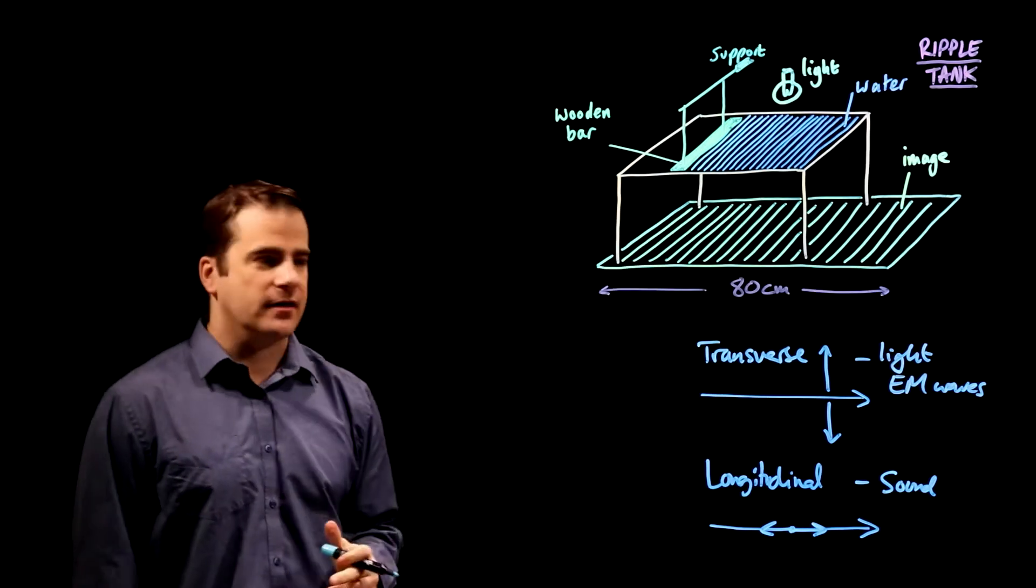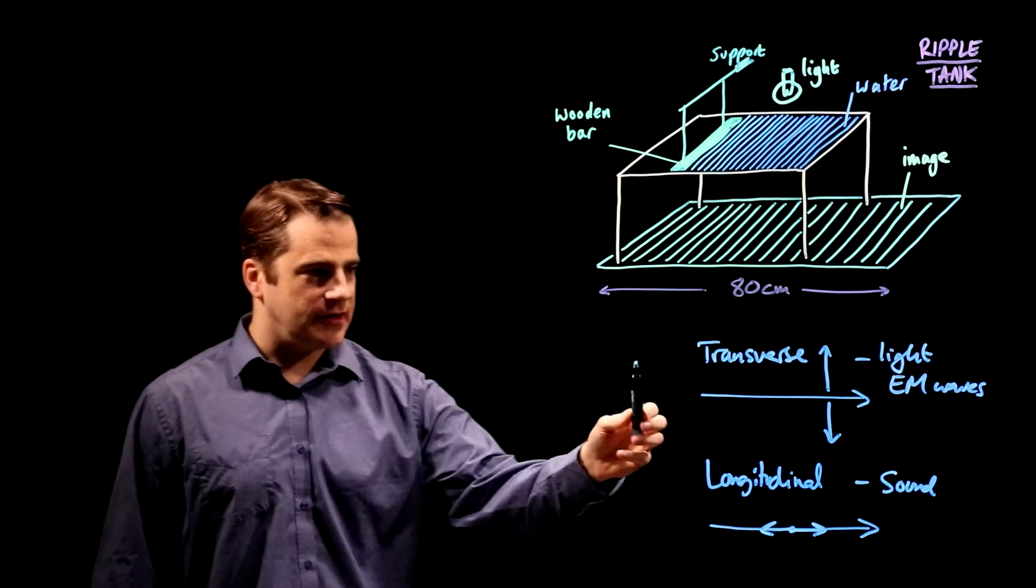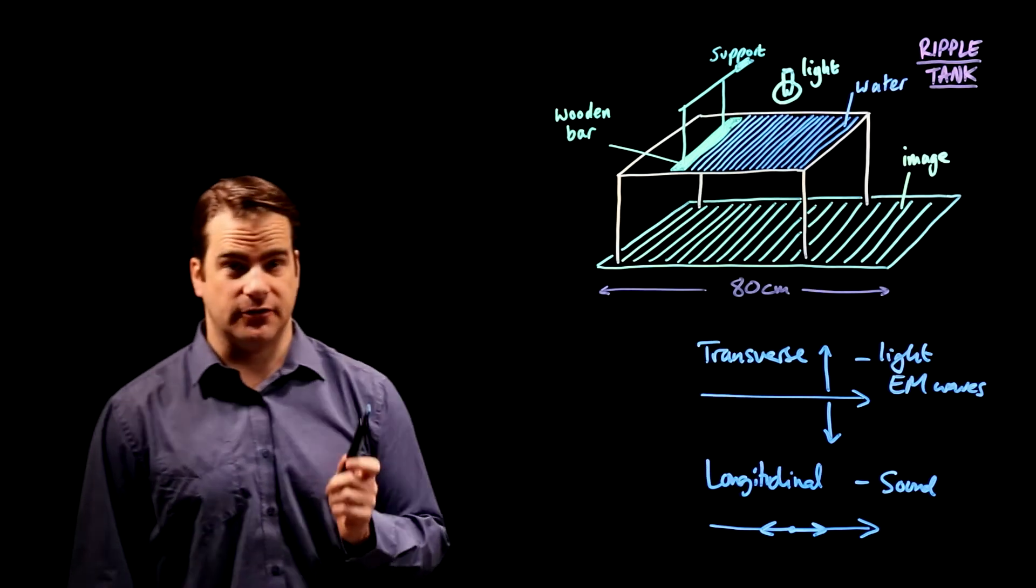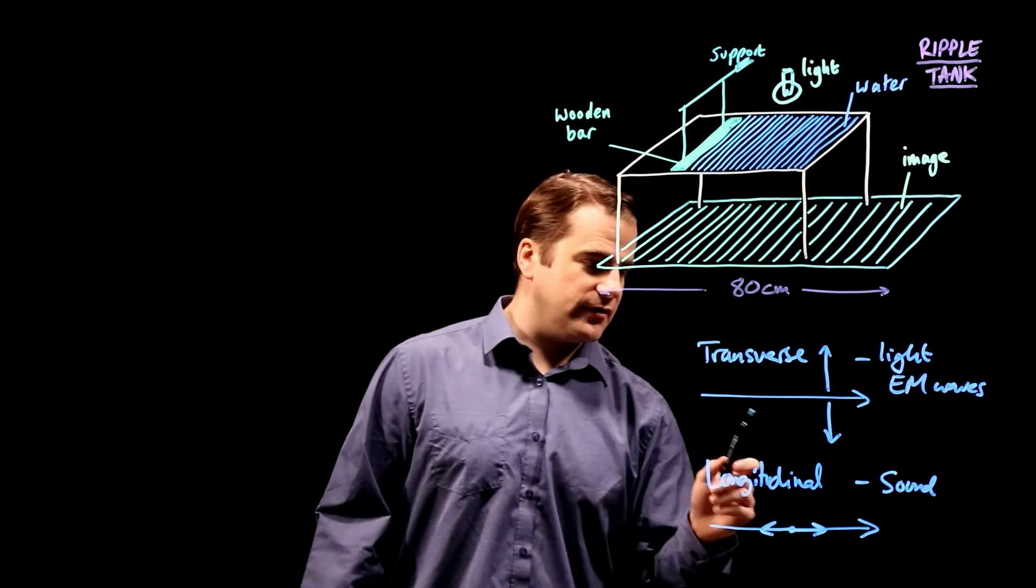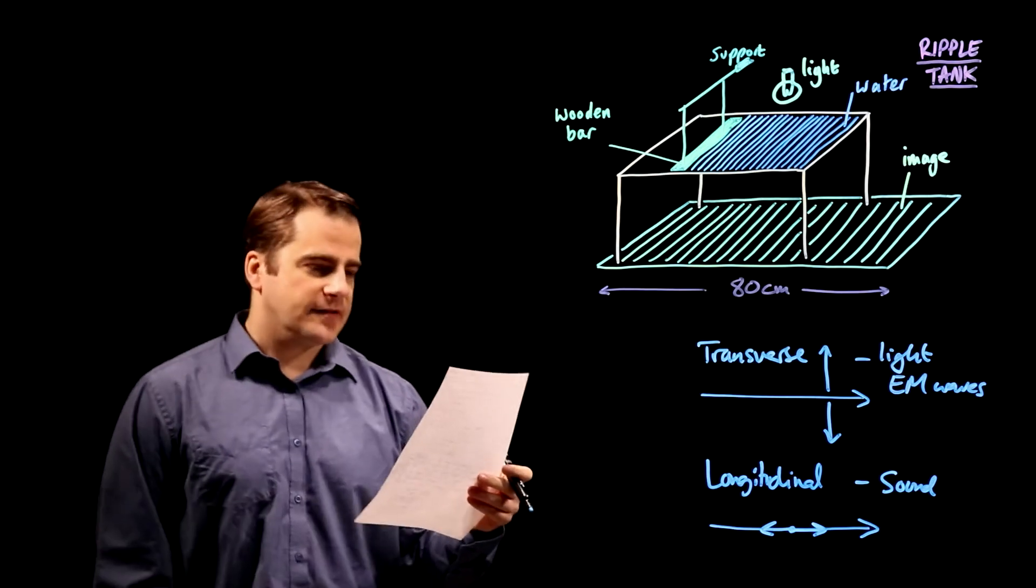So to get the two marks, one mark, say, transverse waves, the oscillations are perpendicular to the direction of travel, longitudinal waves, the oscillations are parallel to the direction of travel. Next question.